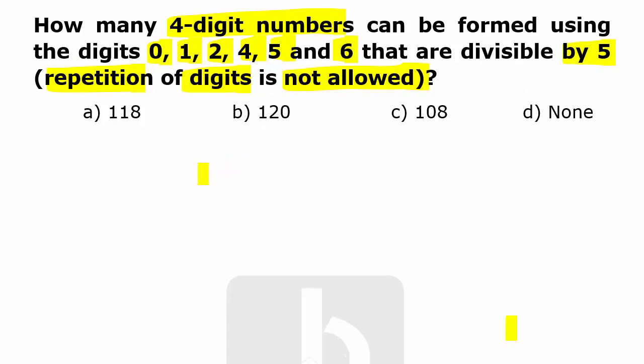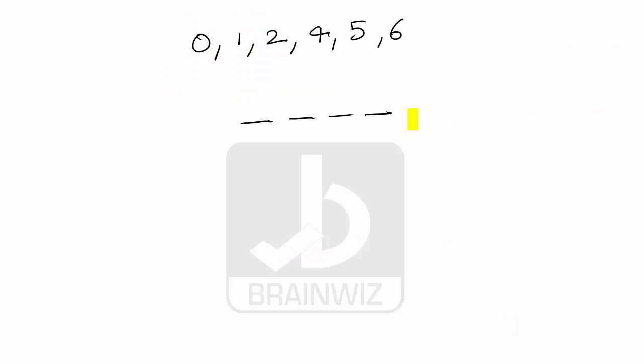Now the digits we have are 0, 1, 2, 4, 5, and 6, and we need to have four-digit numbers and these numbers are divisible by 5. For divisible by 5, we have to remember a logic that the last digit must be either 0 or 5.